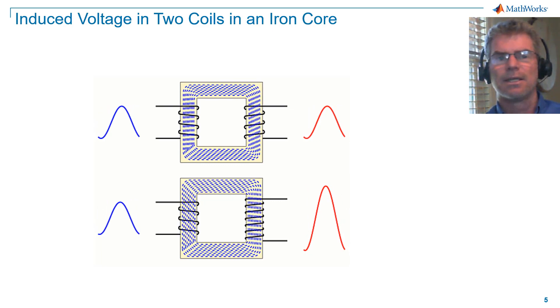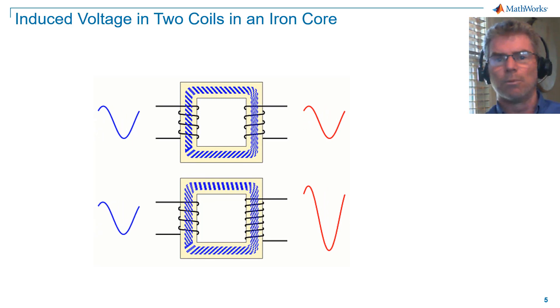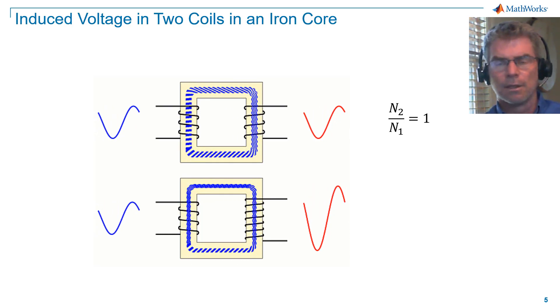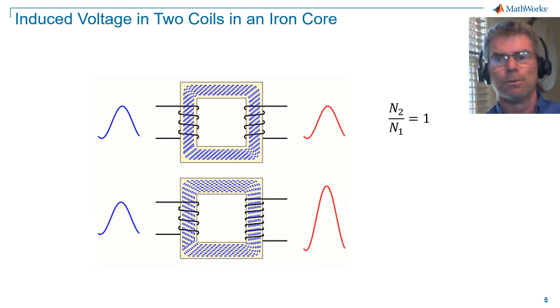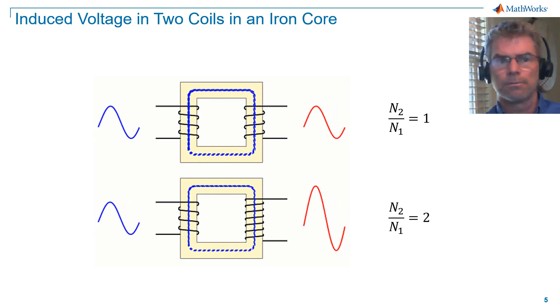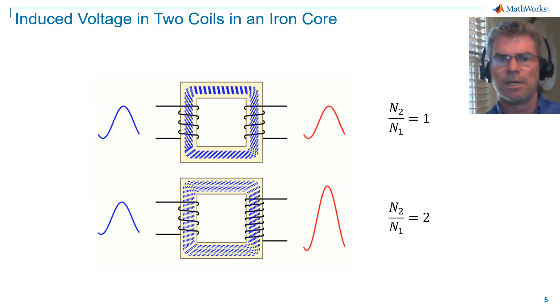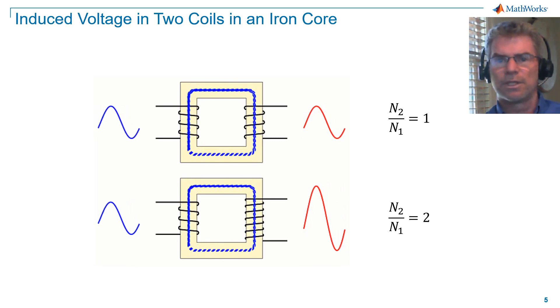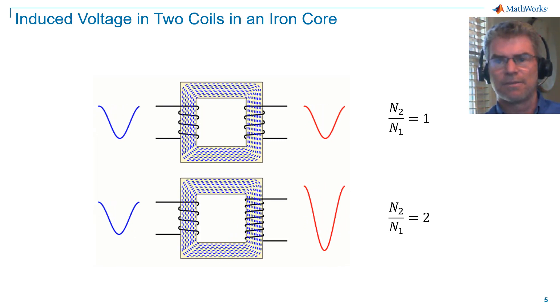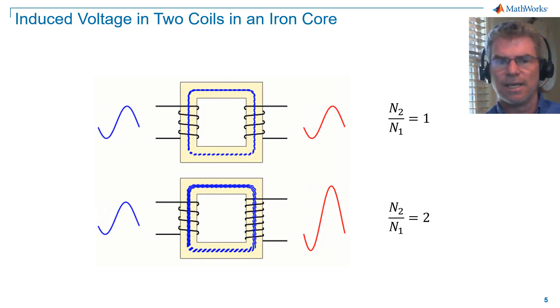In this case, the upper configuration has N2 over N1 equal to 1, and the lower configuration has N2 over N1 equal to 2. The lower secondary voltage is twice the magnitude of the lower primary voltage. Note that the lower secondary current will be half the magnitude of the primary current in this case.